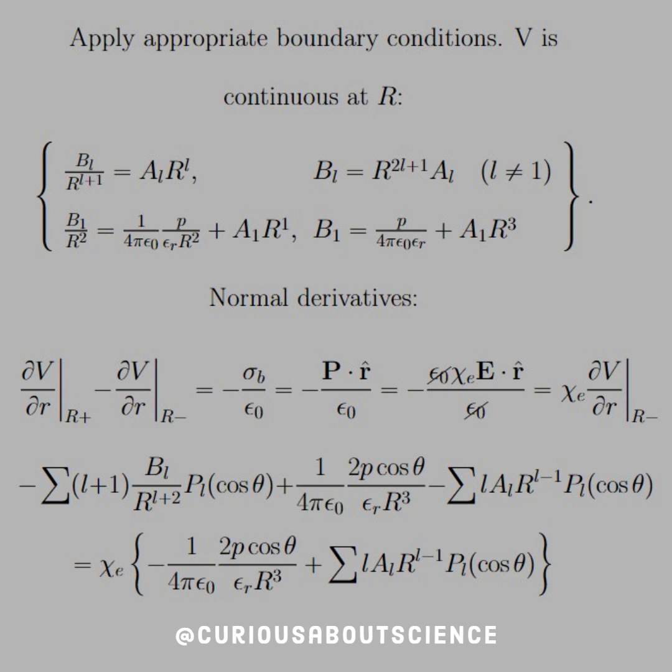Moving forward, so we're going to have to take the normal derivatives. But we know that taking the normal derivatives is equal to the bound charge sigma B over epsilon naught, the negative of that. But we know that the bound charge sigma B is equal to P dot R hat or N hat from the definition. In this case, that's R hat.